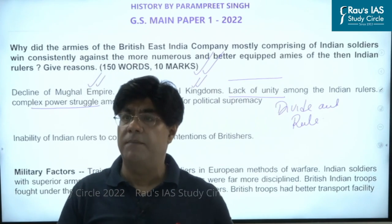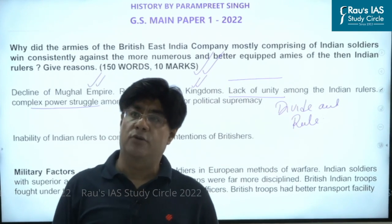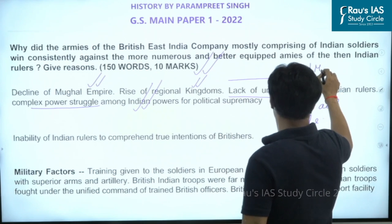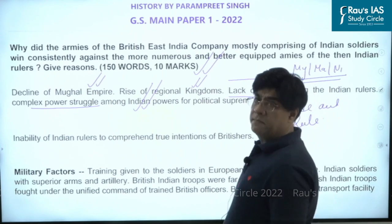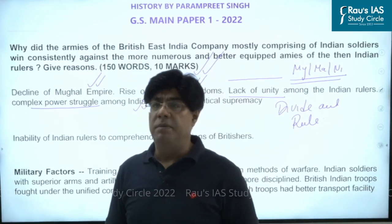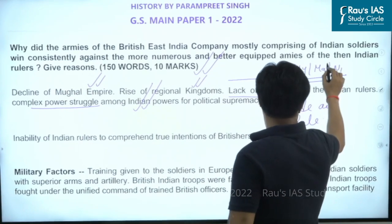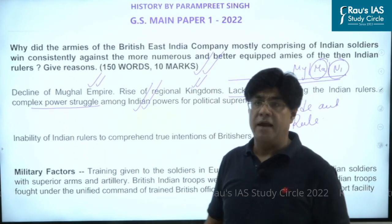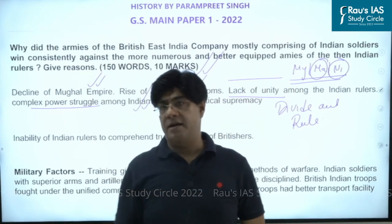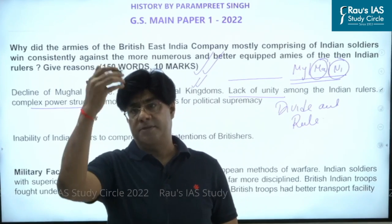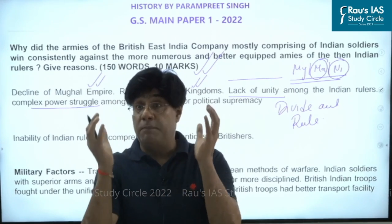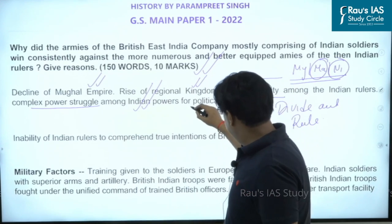One example is how, to defeat Tipu Sultan, the British broke the alliance between Mysore, the Marathas, and the Nizam — an alliance built by Hyder Ali. When Tipu was fighting the British, they won the Marathas and Nizam to their side and with their help defeated Tipu. Later they also defeated the Marathas and made the Nizam sign a subsidiary alliance treaty. So it is not about military weakness only — it is also about the political conditions of that time.